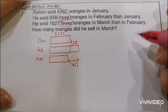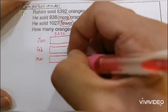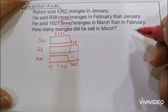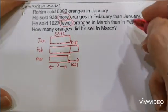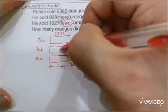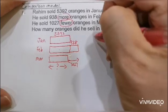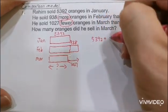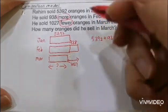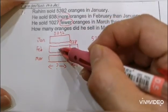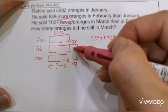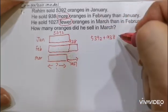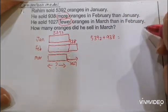Now, to find March I need to first find out what February is. Looking at the model, since January bars are the same length, we just add them up. So 5,392 plus 938 will give us February. Let's put our working by the side.